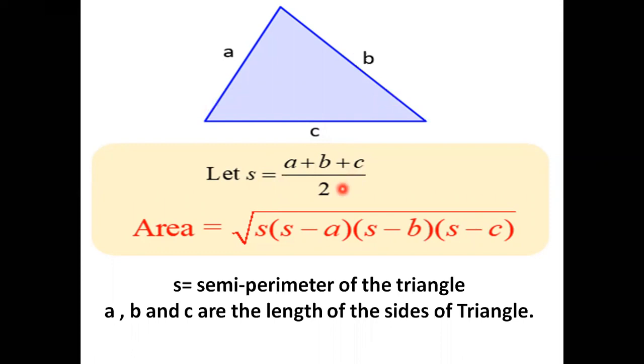Once you get the value of semi-perimeter, all that you have to do is put the values in Heron's Formula. So S stands for semi-perimeter of the triangle, which can be obtained by dividing the perimeter by 2. Or in other words, half of perimeter is semi-perimeter.